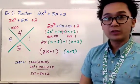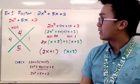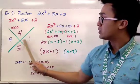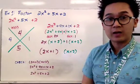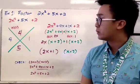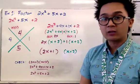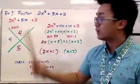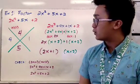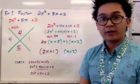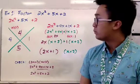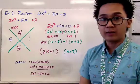Sometimes the factors are easy to find, and sometimes it takes a while — not all quadratic equations are as simple as this one. You just need to be patient in finding the two numbers needed to complete the factoring procedure.